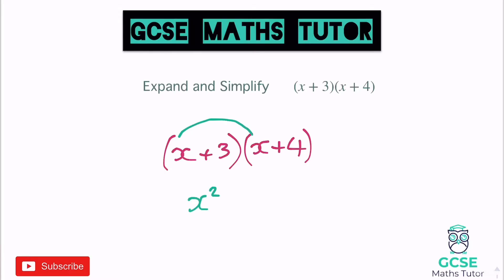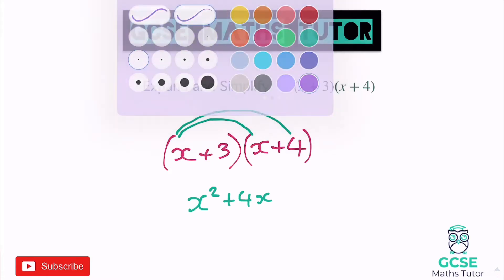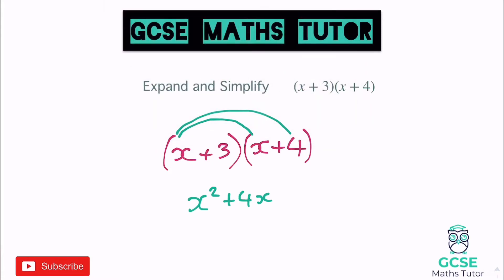Then x times 4, and x times 4 is 4x. Taking note that it is a positive 4, so that will be positive 4x — because that obviously changes when the signs change. Then I move down onto the 3, times both terms by 3. So 3 times x is positive 3x, and then 3 times 4 — positive 3 times positive 4 — is positive 12.